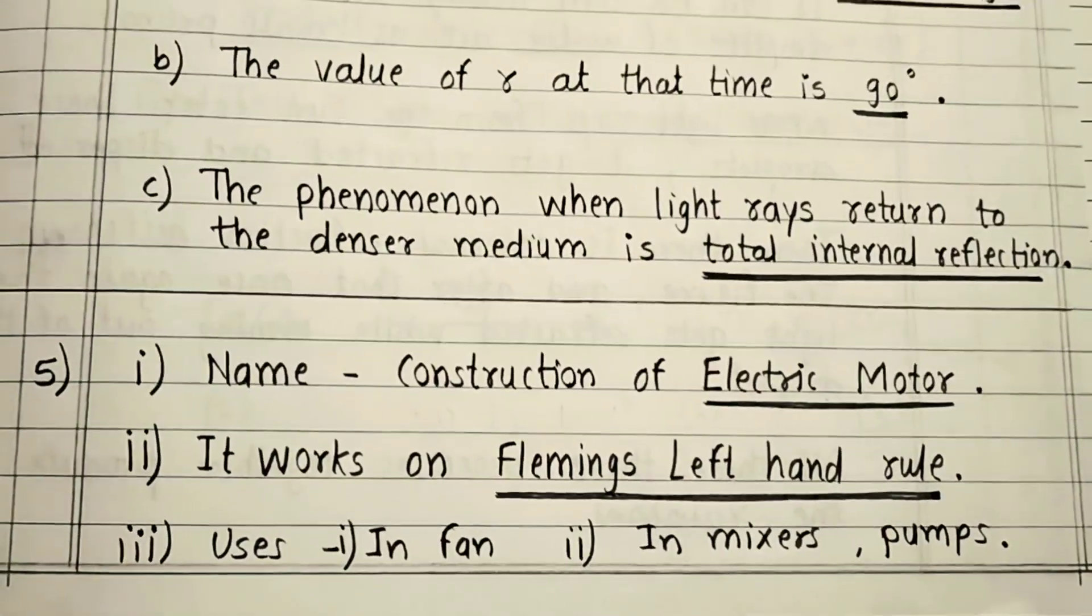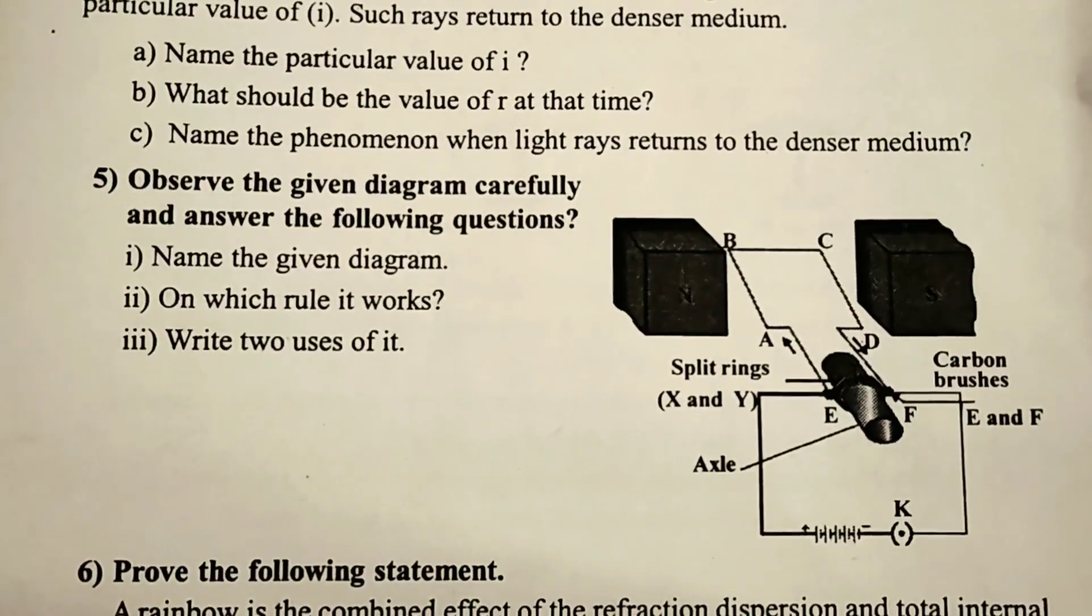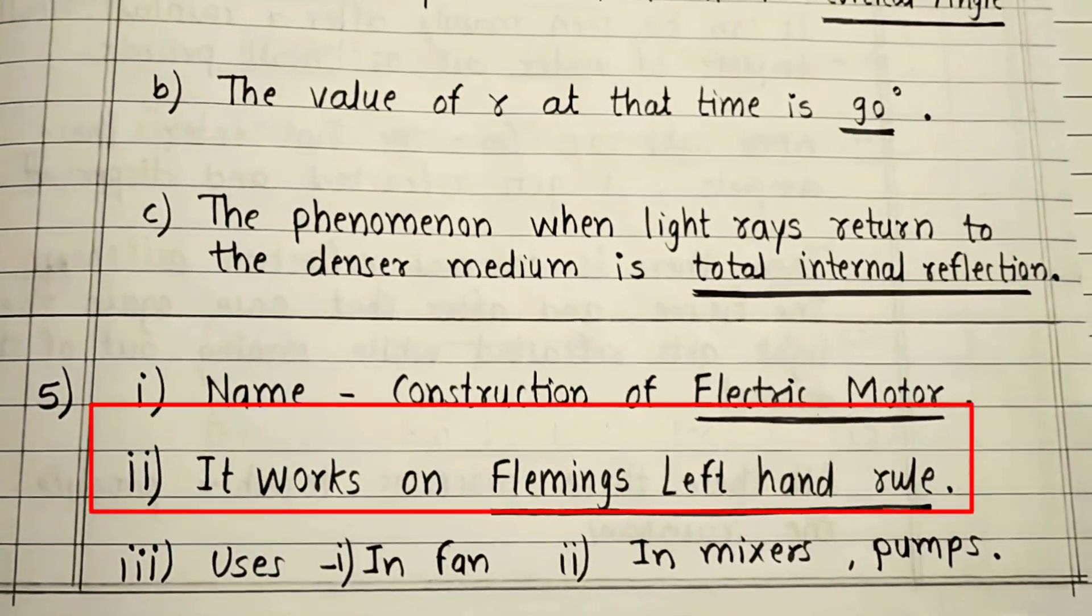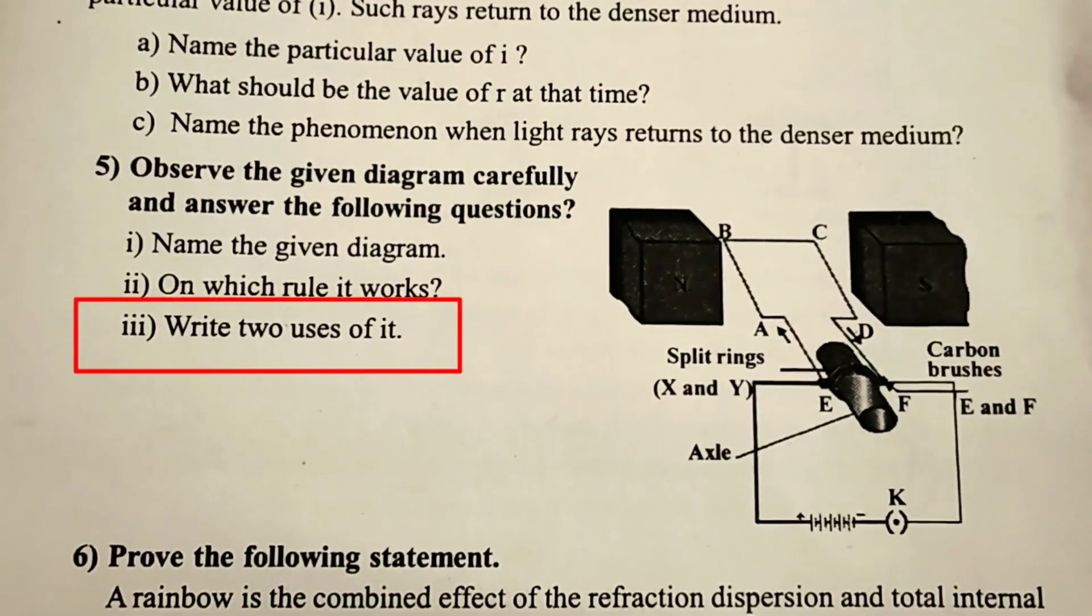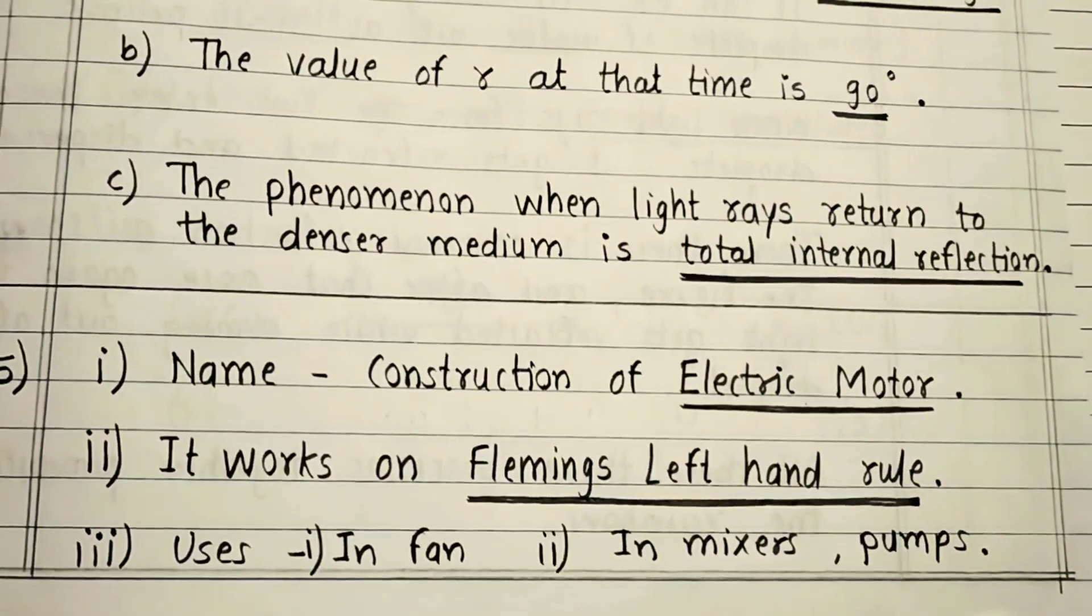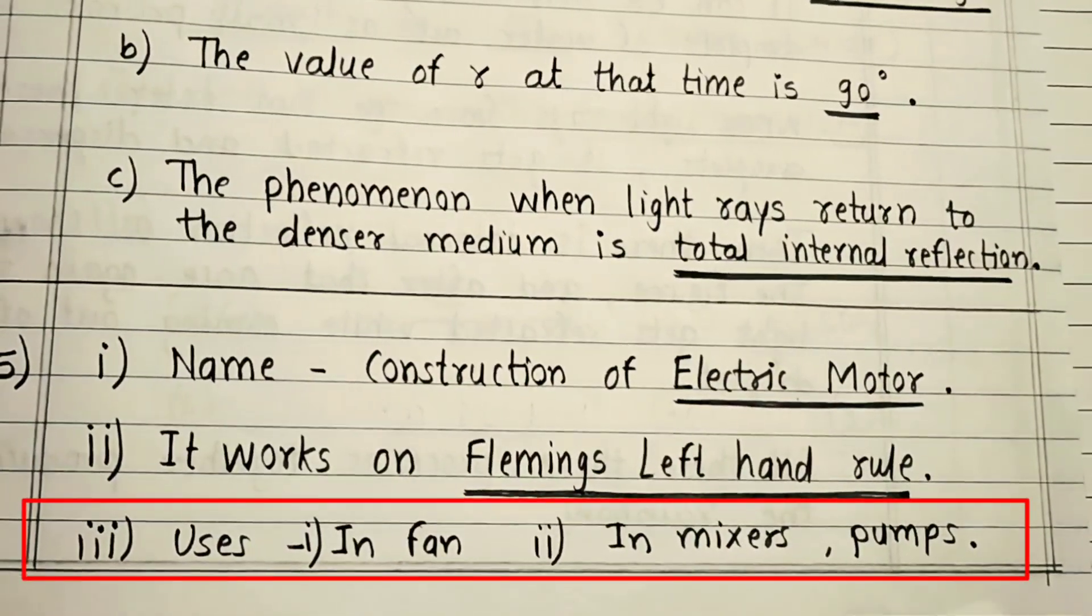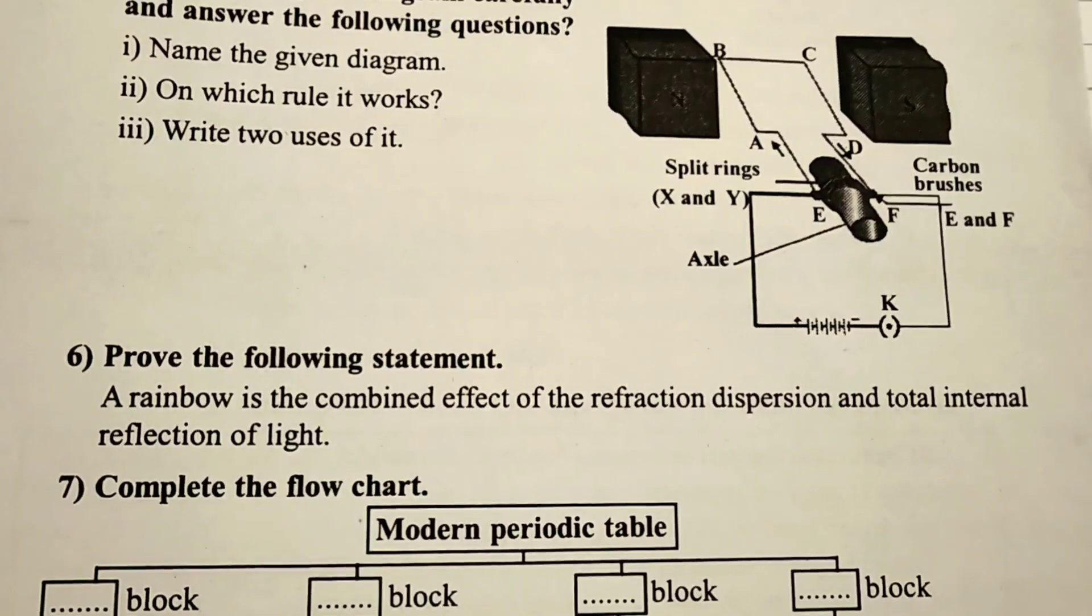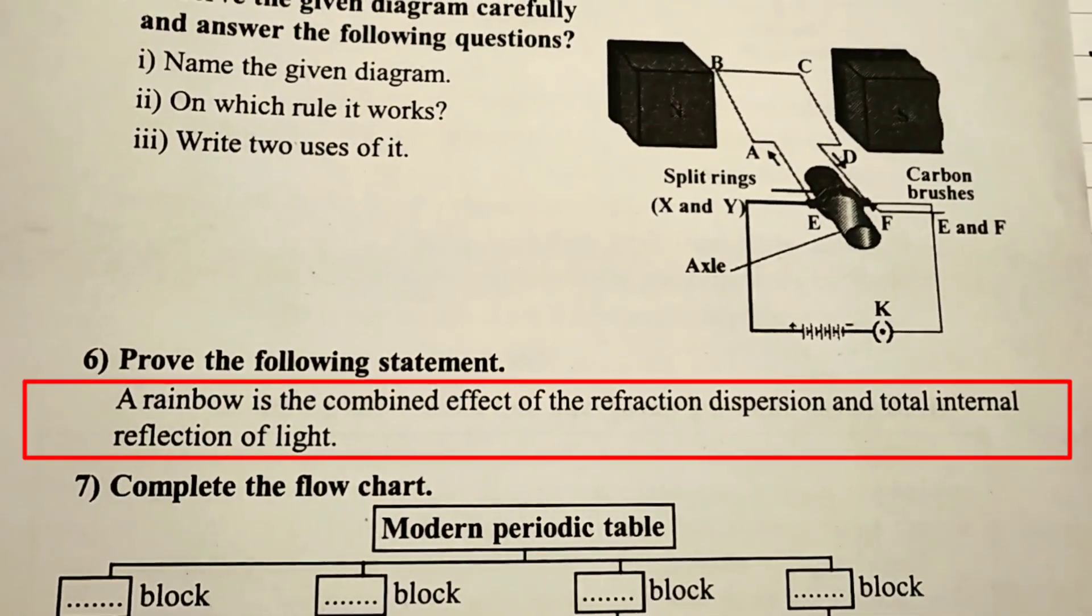Question 5: Observe the given diagram carefully and answer the following questions. Name the given diagram. Name construction of electric motor. On which rule it works. It works on Fleming's left hand rule. Write two uses of it. Uses: one in fan, second in mixtures and pumps.